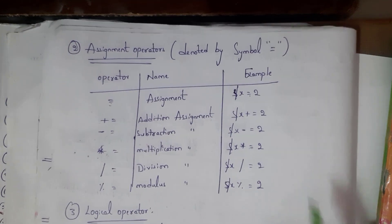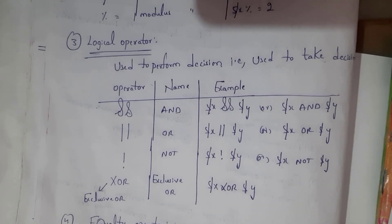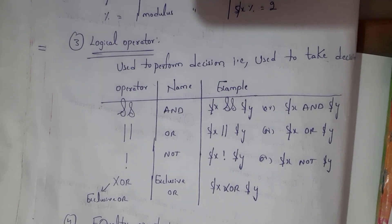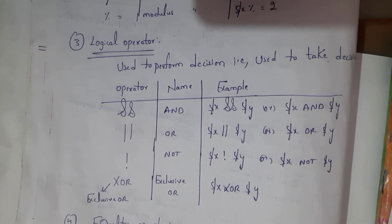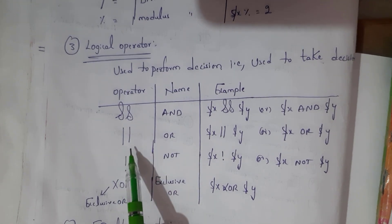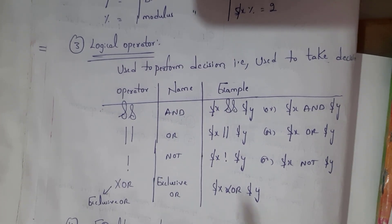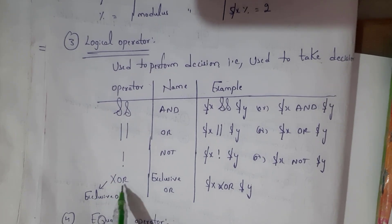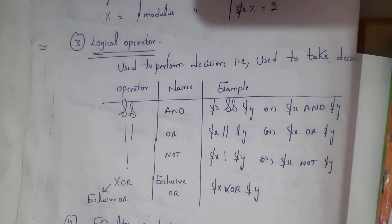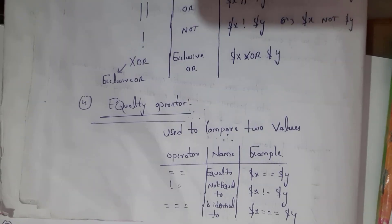The third one is the logical operator. This logical operator is used to perform decisions — in order to take decisions we use logical operators. There are four types: AND, OR, NOT, and XOR (exclusive OR). These are the examples for this logical operator.